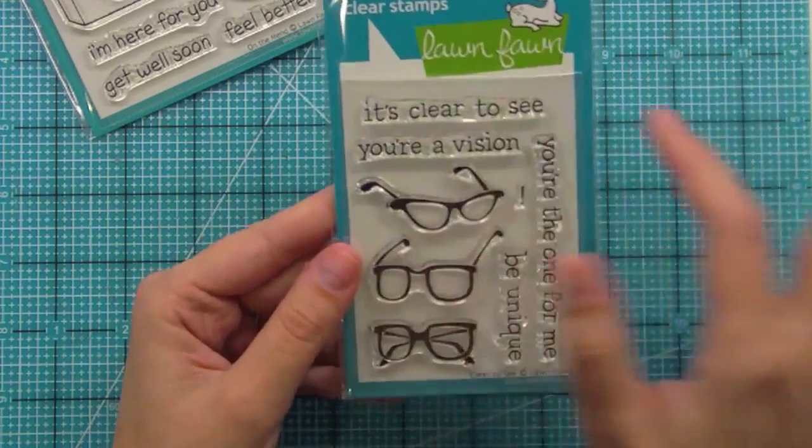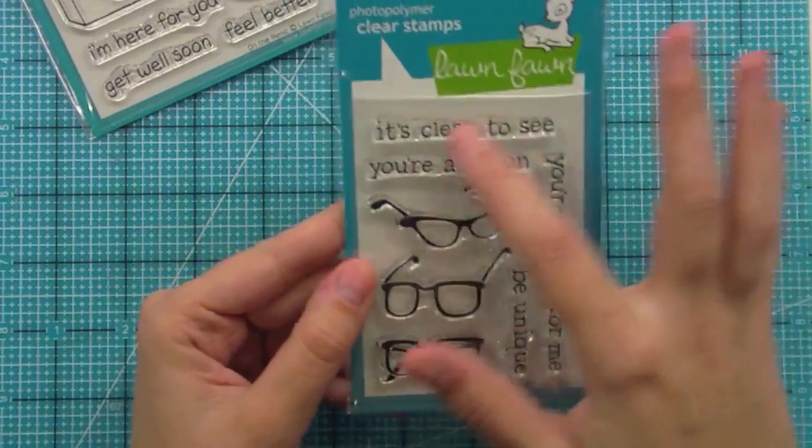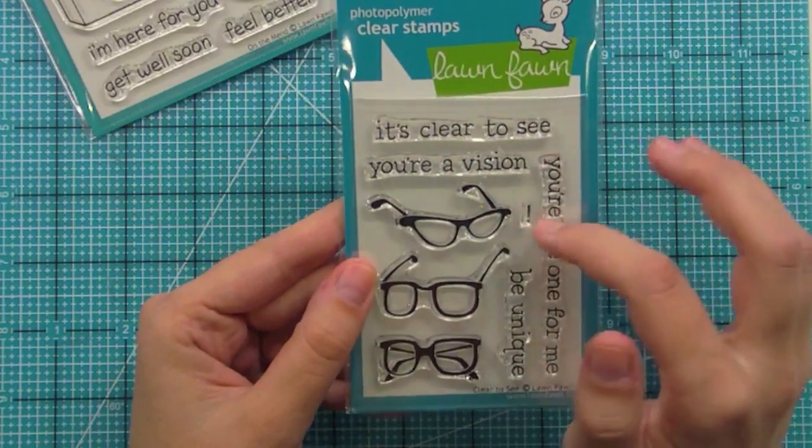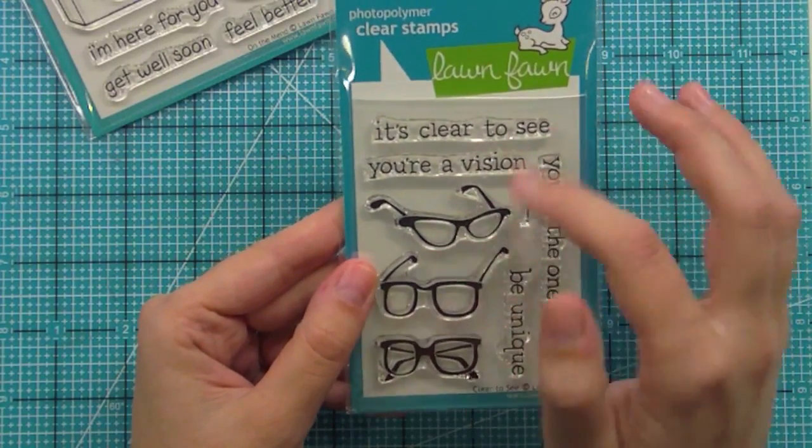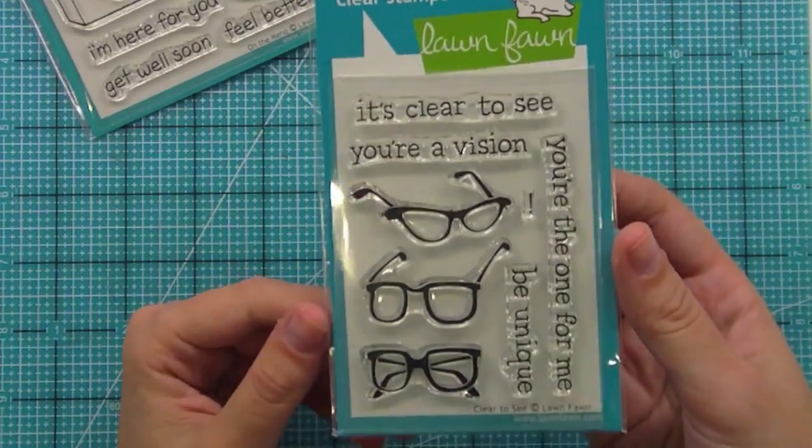Then we also have 'Be Unique,' which I think is a really fun sentiment, and then 'it's clear to see,' and then you could put 'you're the one for me' or 'you're a vision.' We always put the exclamation point separate so you could add it or not. This set is just super fun. I love it and I really love this font.